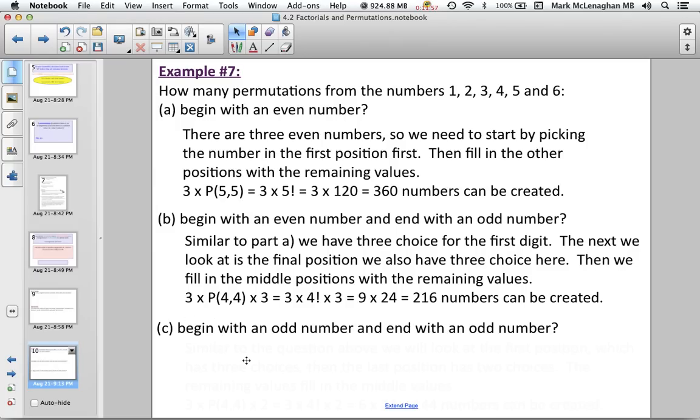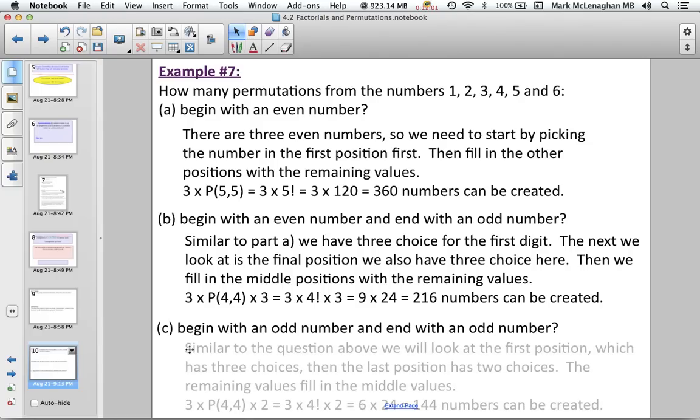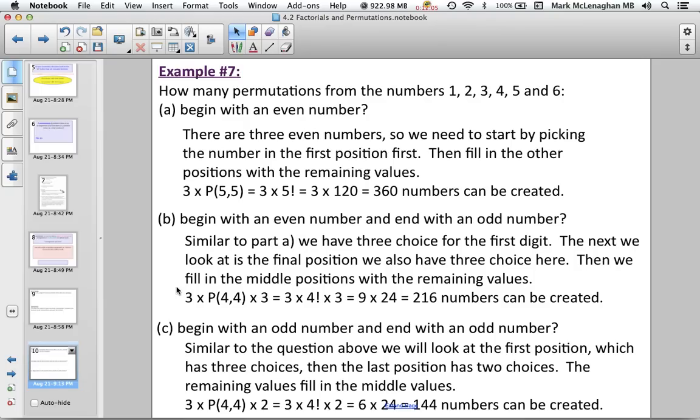And the last part is begins with an odd number and ends with an odd number. So similarly to the questions above, we have fill in the first position, which had three choices, and the last position we have two choices. The remaining values fill in the middle, so you have 3 times 4P4 times 2, which is 3 times 4 factorial times 2, which is 6 times 24, or 144 numbers can be created.